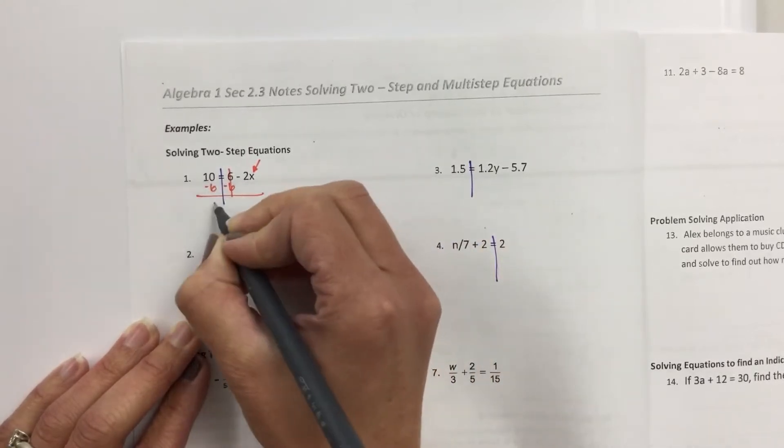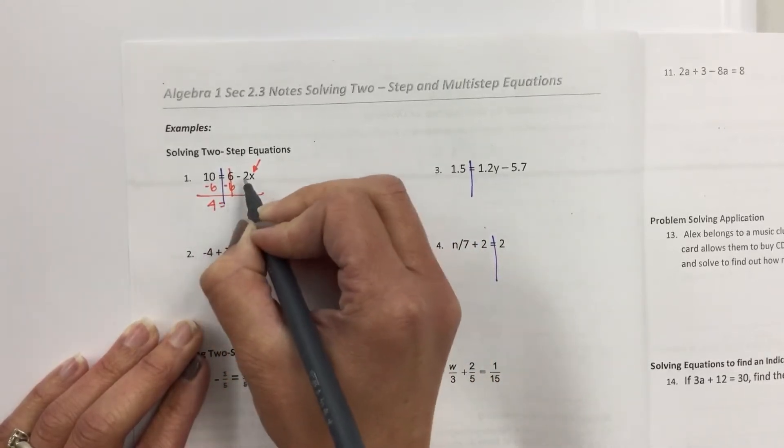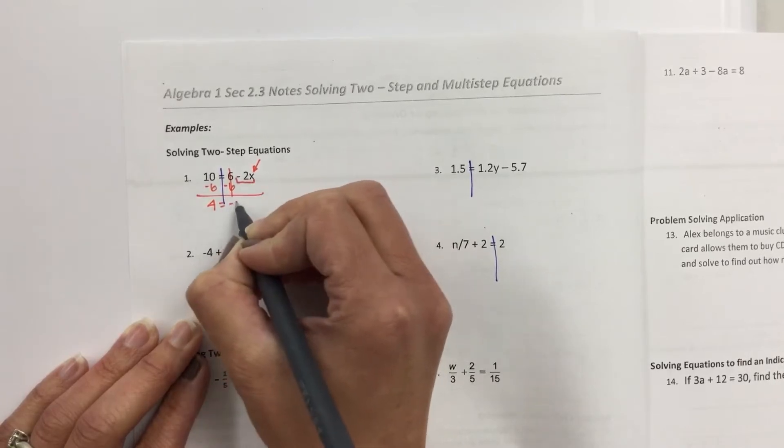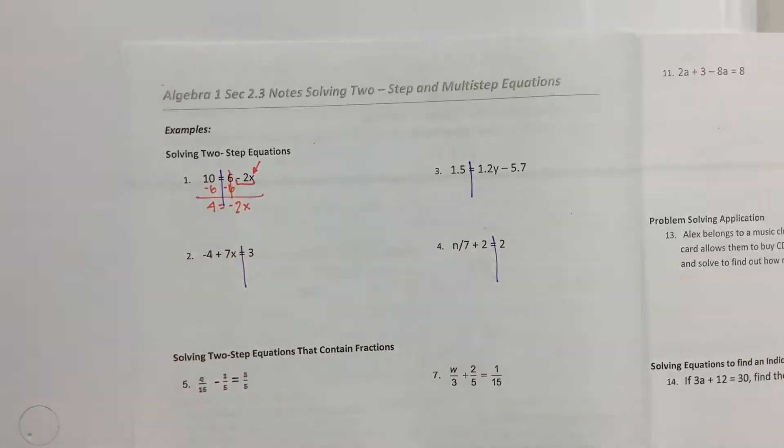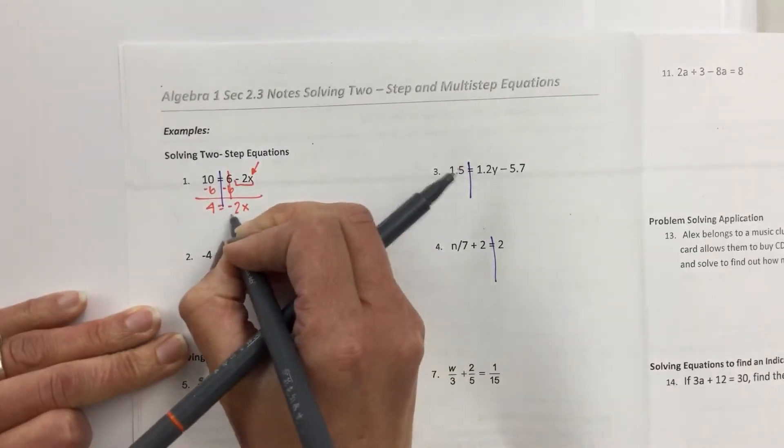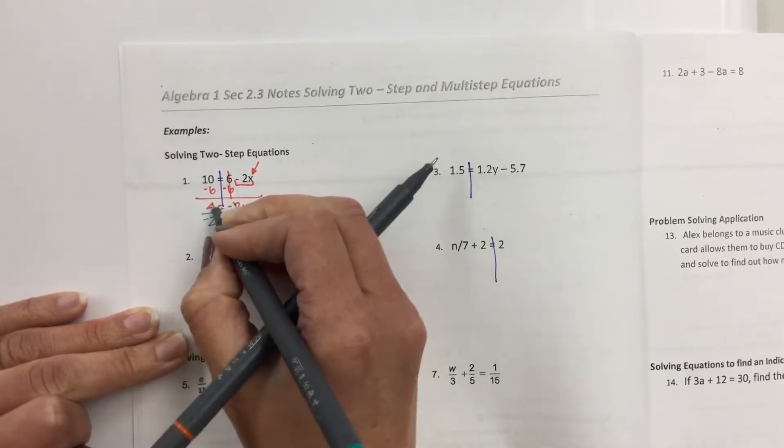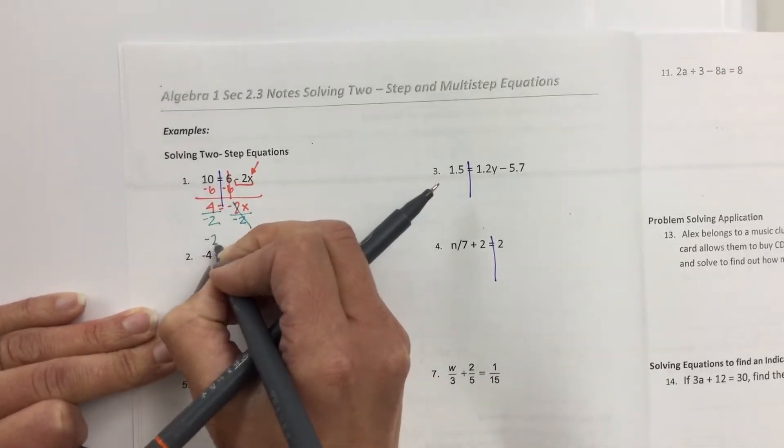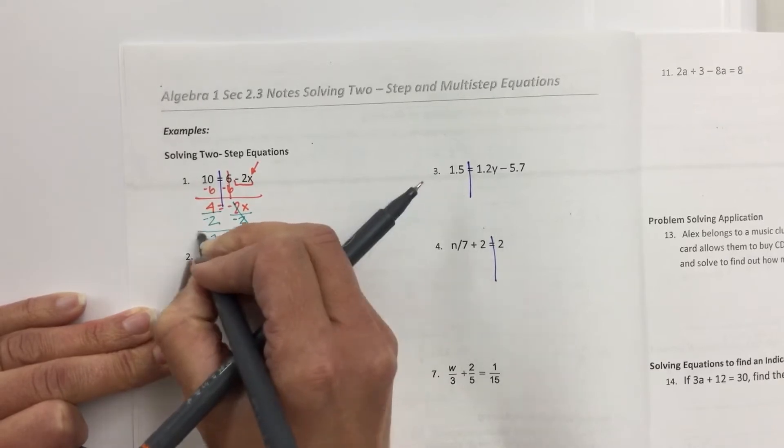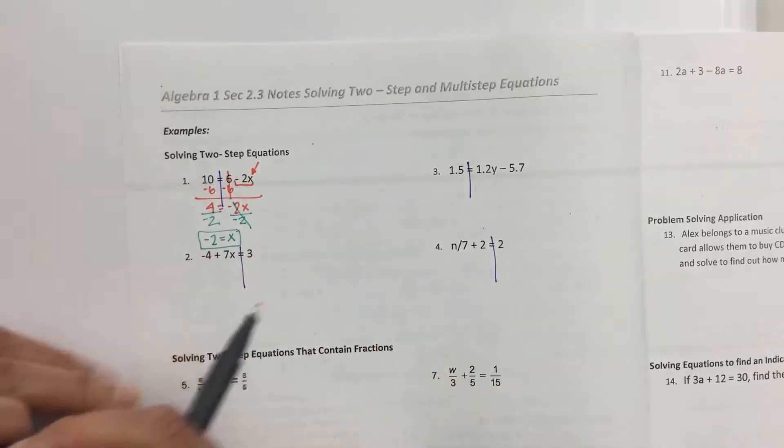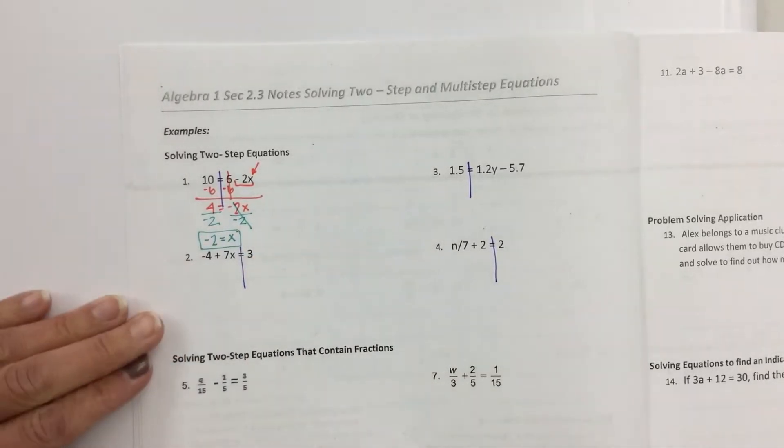10 minus 6 is 4. And then don't forget that there's a negative with that 2x. So then, how do you get rid of the negative 2? You divide by a negative 2. And 4 divided by a negative 2 is a negative 2.